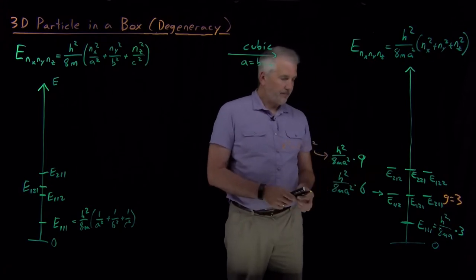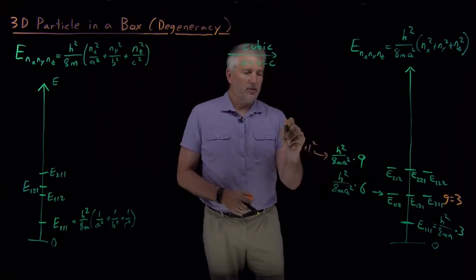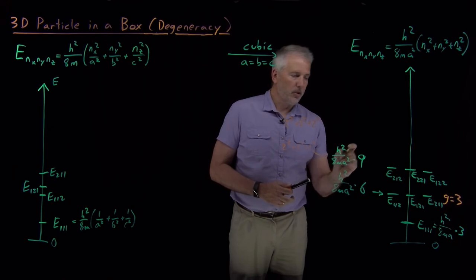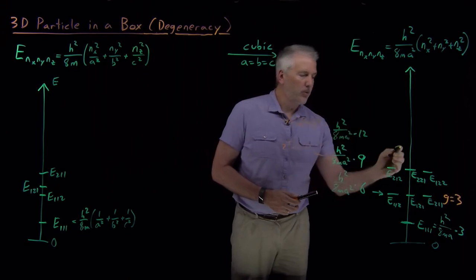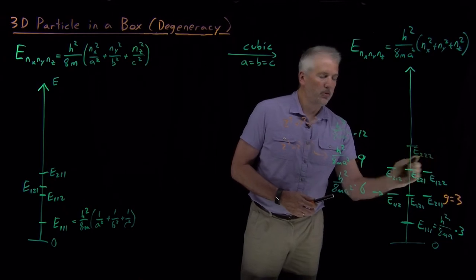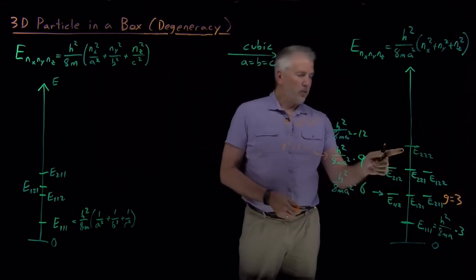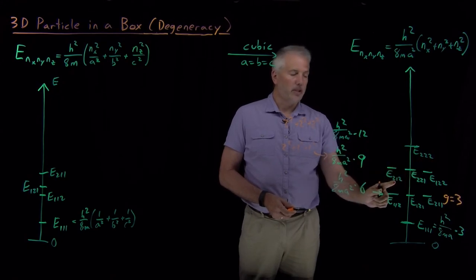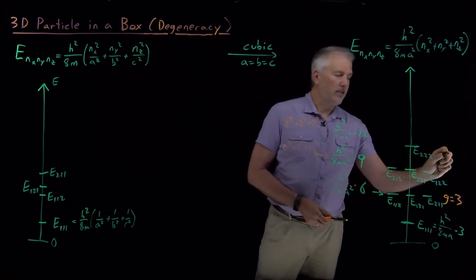Let's bring all three quantum numbers to 2: n_x = n_y = n_z = 2. Then 2² + 2² + 2² = 4 + 4 + 4 = 12, so the energy is 12 × h²/8ma² for the (2,2,2) level. Notice this one is not degenerate — there's no different permutation possible. There's only the single (2,2,2) state, so it is singly degenerate.